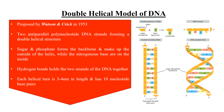The double helical model of the DNA molecule was proposed by Watson and Crick in 1953. They stated that the DNA molecule is composed of two anti-parallel polynucleotide DNA strands that form a double helical structure. The backbone of the DNA molecule is made up of sugar and phosphate, which forms the outside of the helix, while the nitrogenous bases form the inside of the helix.